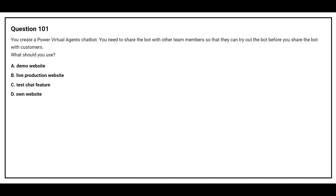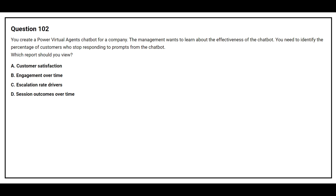Option D: own website. The correct answer is Option A: demo website. Question number 102: You create a Power Virtual Agents chatbot for a company. The management wants to learn about the effectiveness of the chatbot. You need to identify the percentage of customers who stop responding to prompts from the chatbot. Which report should you view? Option A: customer satisfaction.